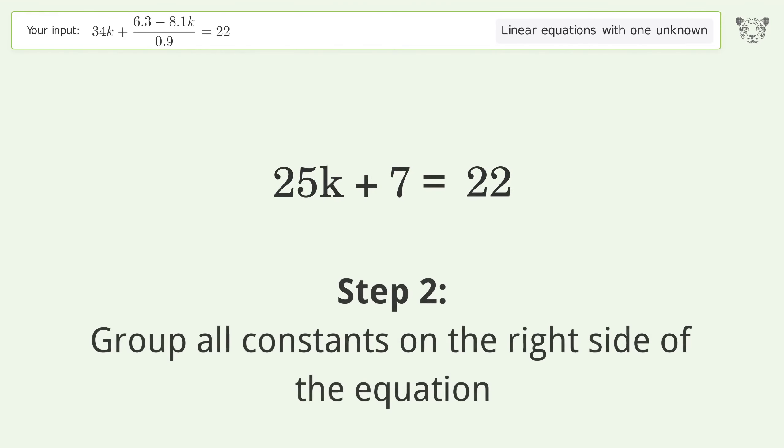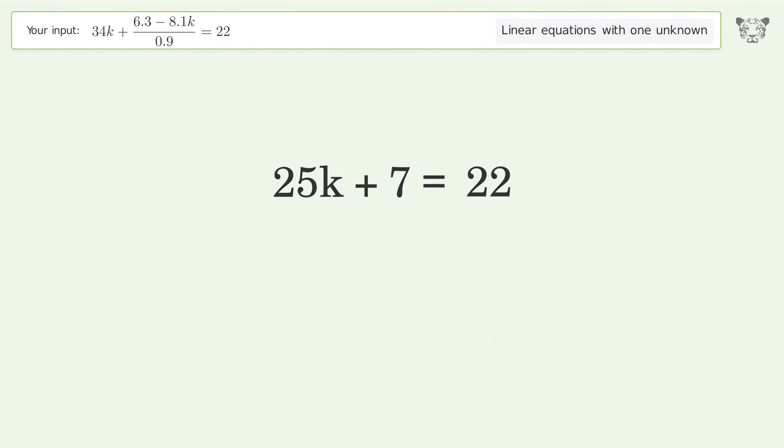Group all constants on the right side of the equation. Subtract 7 from both sides. Simplify the arithmetic.